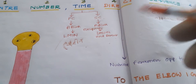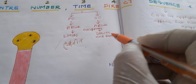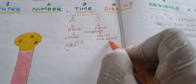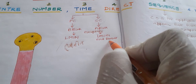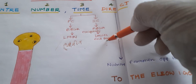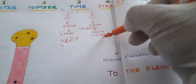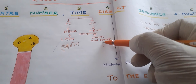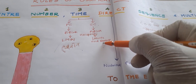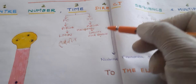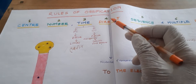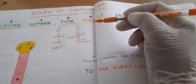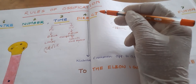At around eight to nine months of pregnancy, the secondary center at the lower end of femur appears. This also has medico-legal importance. Now coming to the fourth rule — that is 'direct' — the direction of the nutrient foramen.